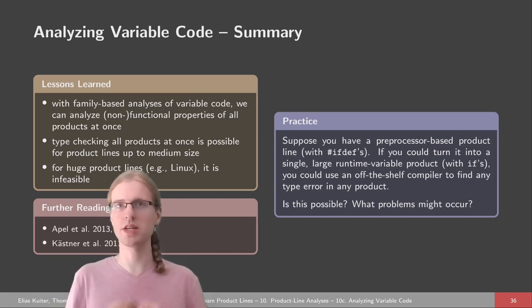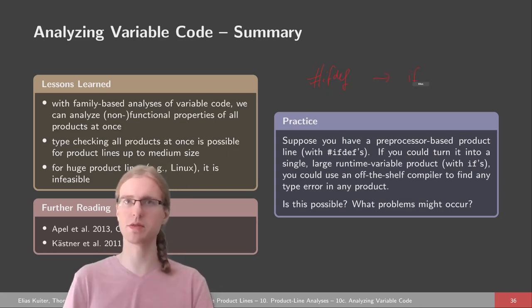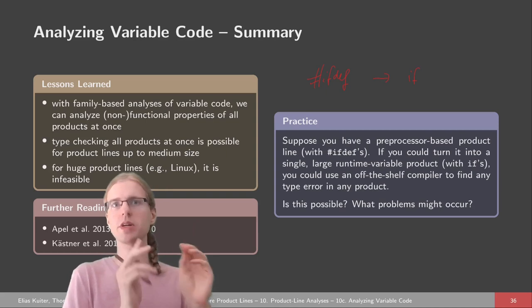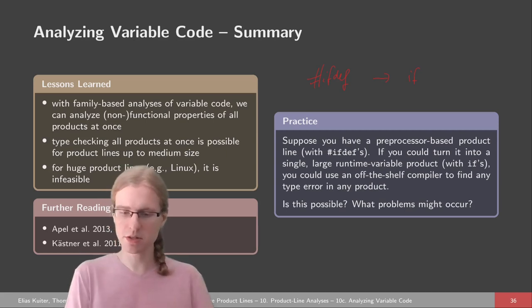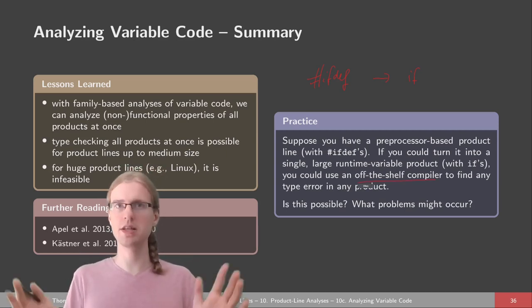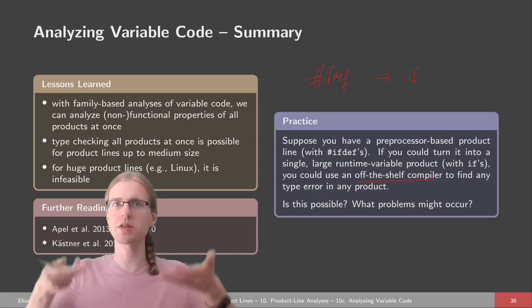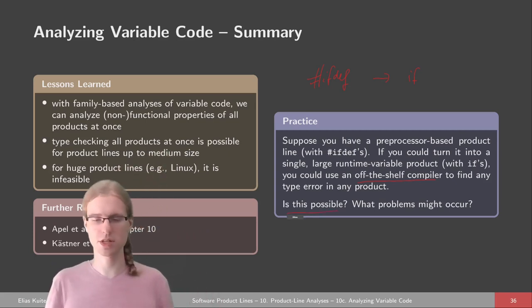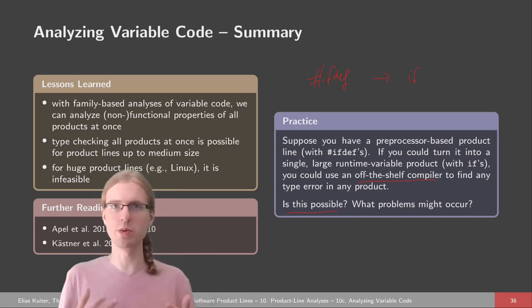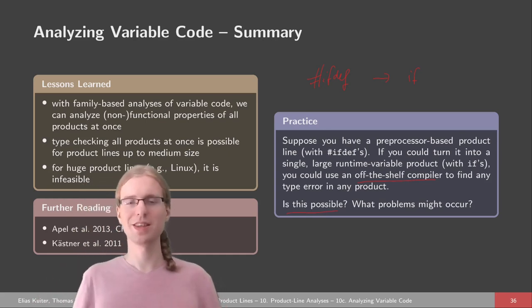As a closing thought: suppose you have a product line with ifdefs and you turn these ifdefs into ifs, moving from a preprocessor-based product line into a runtime-variability-based product line from lecture 2. Then you can use any compiler to find type errors in any product — a legitimate family-based analysis, lifting the analysis from single products to all products at once. The question is: is what I described possible? To what degree? What problems might occur when you try to do this? Thank you for listening to this lecture, and we hope to see you again in the next lecture on product line testing.